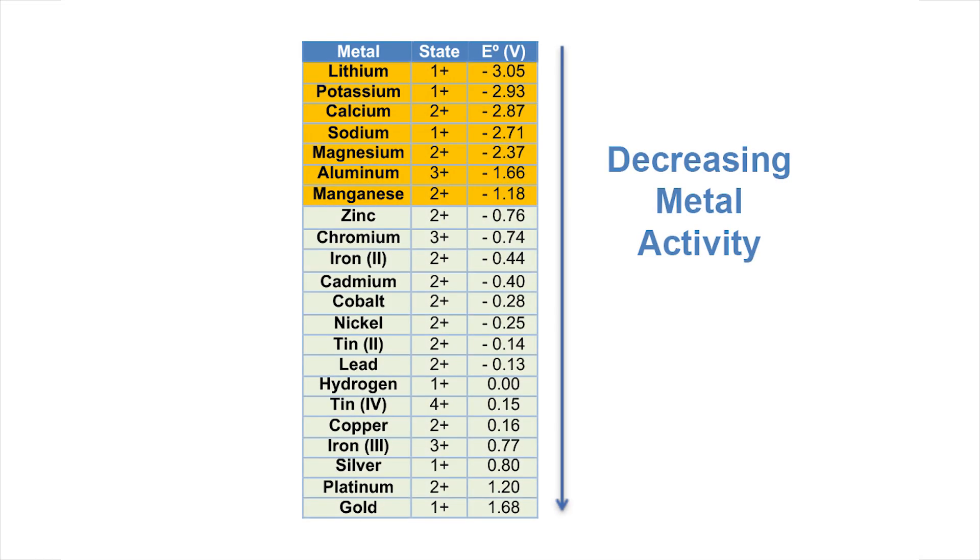The electrochemical series is a list of different elements and their standard reduction potentials, which tell you how easily these elements gain electrons. The higher up on the series, or more negative the standard reduction potential, the more difficult the element is to electrowin, and less likely it is to gain electrons.